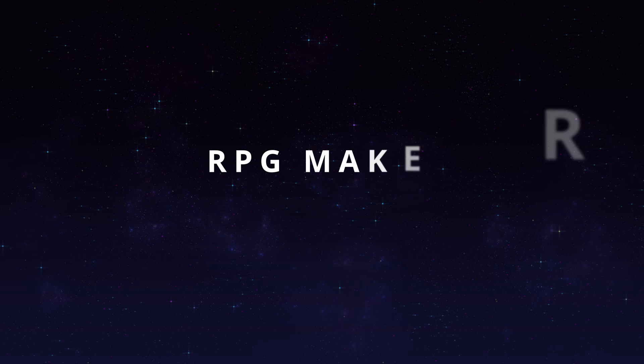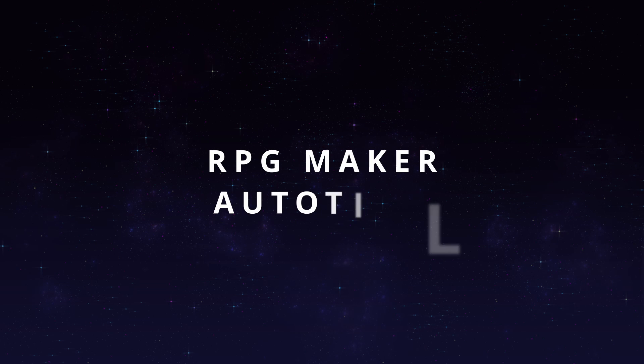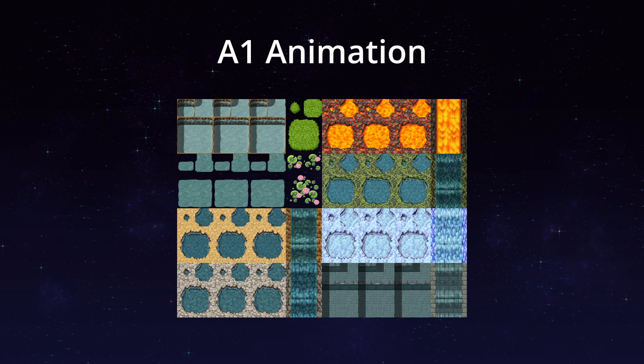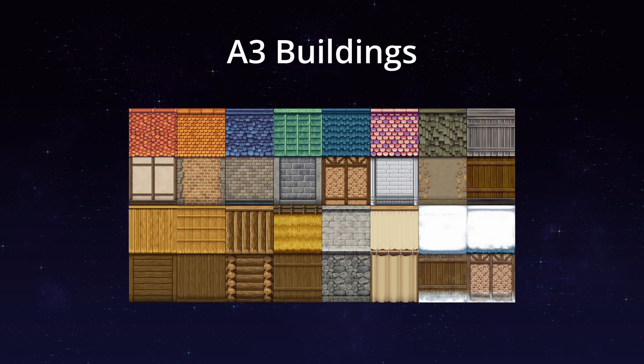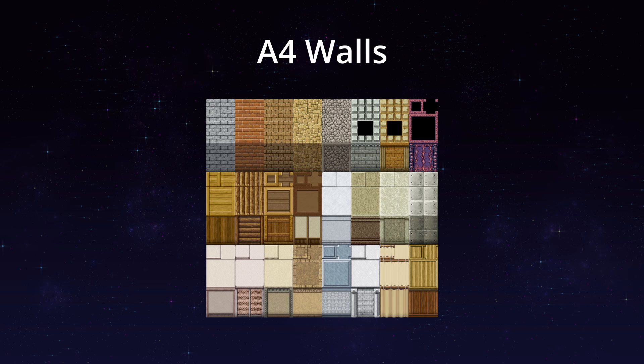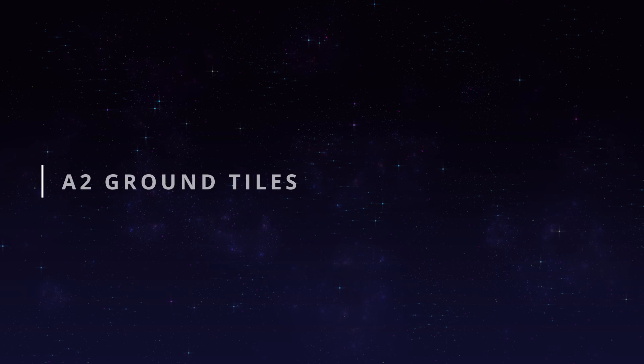Let me explain how Auto Tiles in RPG Maker MV and MZ work so that you are able to create your own. They have four different types of Auto Tiles: Animation, Ground, Buildings, and Walls. Let's start with the ground tiles and move on from there.